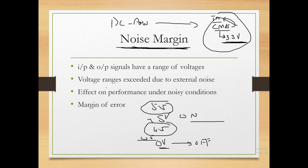So what effect will this noisy condition have on the IC? The margin of error — how much error can the IC handle — this is what we call noise margin.